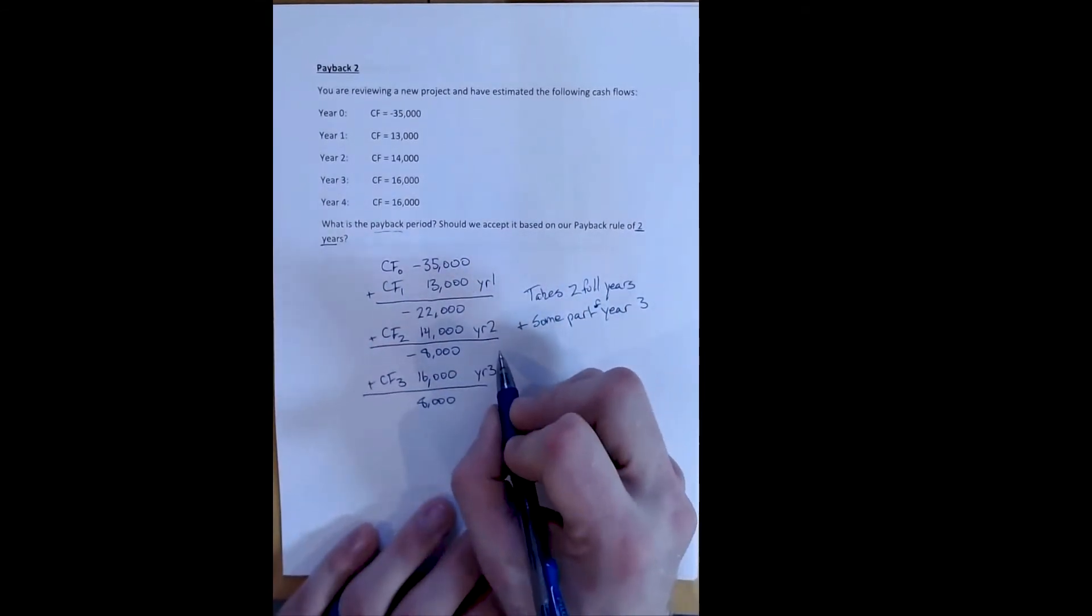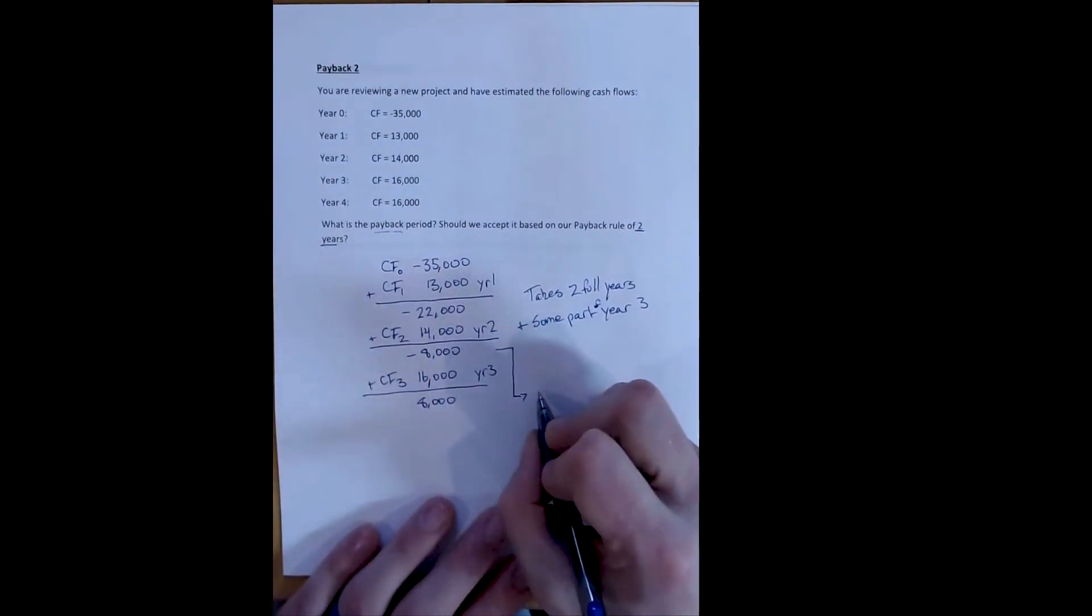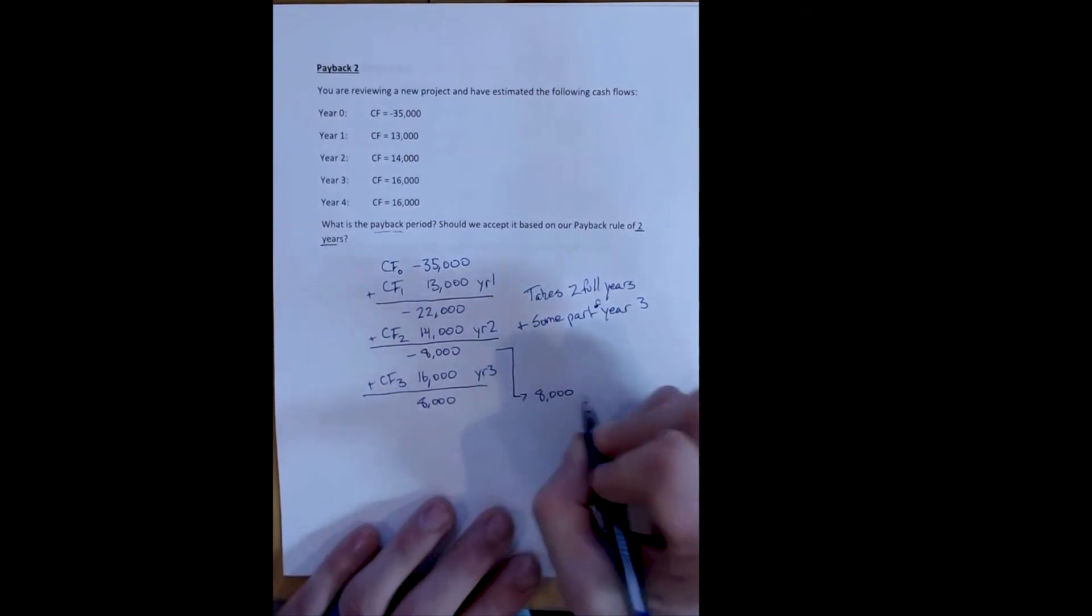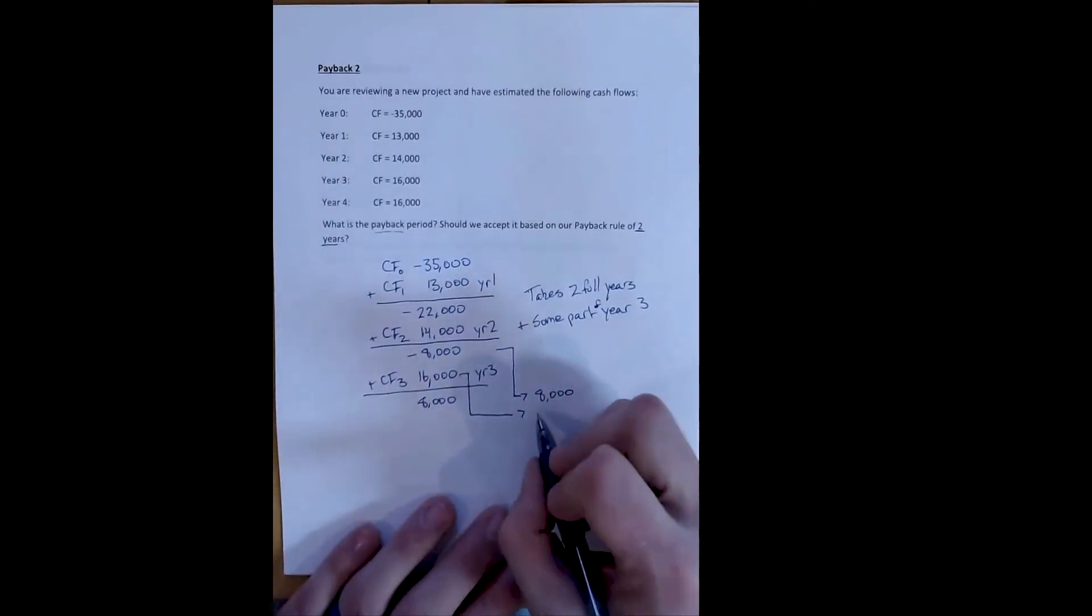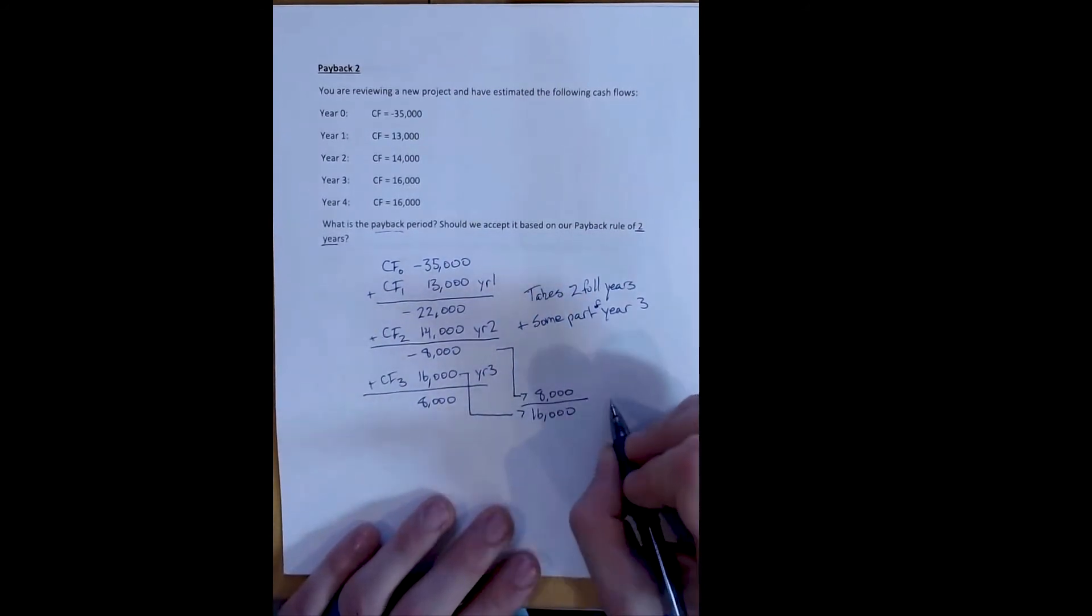How do we find out how long it took during year three? We divide the amount that we still have to pay back by the positive cash flow that we earned during the third year. So $8,000 divided by $16,000 is 0.5.